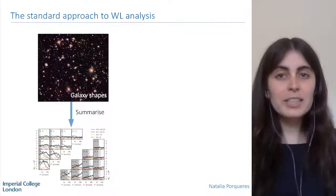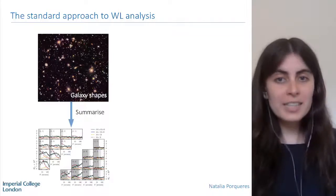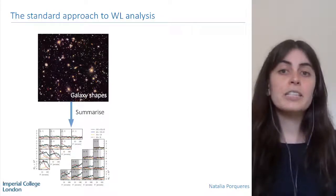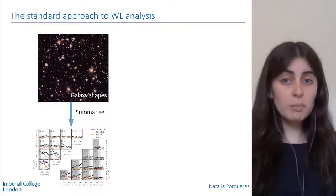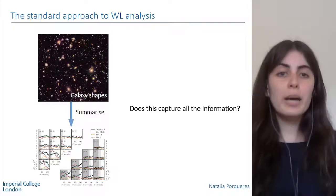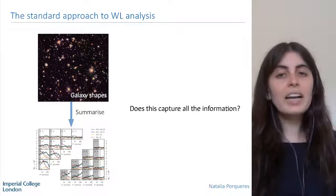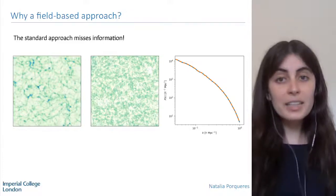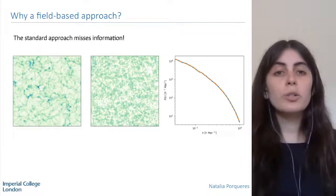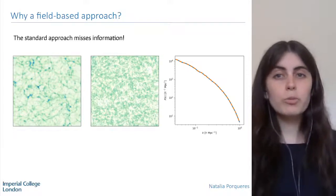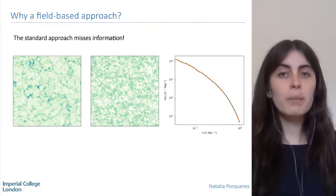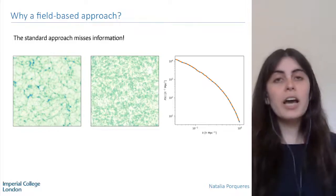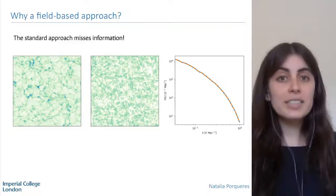Looking at the two-point statistics of these datasets has brought us a long way and gave us a lot of insights into how the universe works and what it is made of. But now we need to ask: by compressing all these galaxy shapes into just the power spectrum and correlation function, are we capturing all the information in the data? The answer is no. The standard approach misses a lot of information. As an illustration, you see two fields that are clearly different by eye but have exactly the same power spectrum. So if we only measure the two-point statistics we cannot distinguish between a simulation of the cosmic web and a Gaussian random field. There is much more information in the data than the two-point statistics can capture, and if we want to make full use of the observations we need to access this additional information.